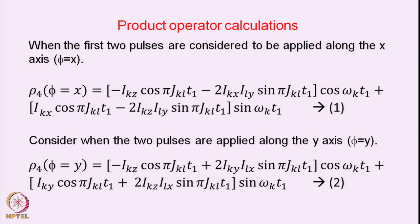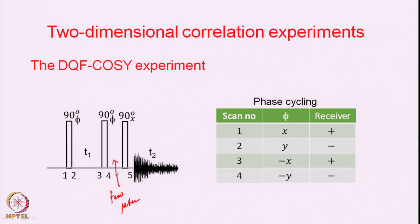Now let us understand how this works and what is the consequence of doing 4 different scans and adding and subtracting them. The first two pulses are similar to the COSY: two 90-degree pulses with the same phase, 90x-90x, so the density operator calculation remains the same. We directly write the value of the density operator at this point starting from the K-spin magnetization, with initial Z-magnetization of both K and L spins for a 2-spin KL system.